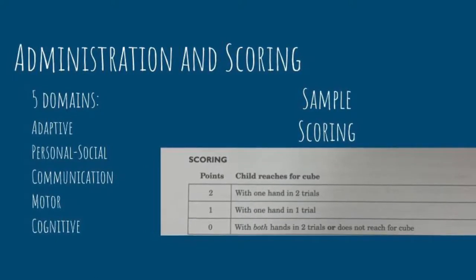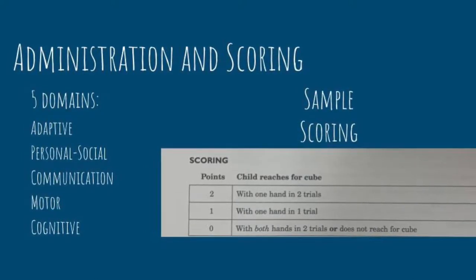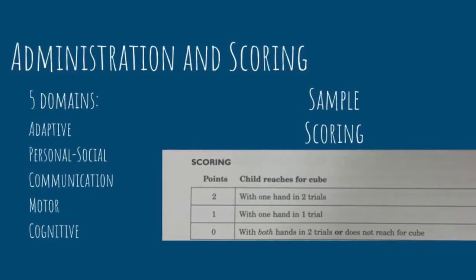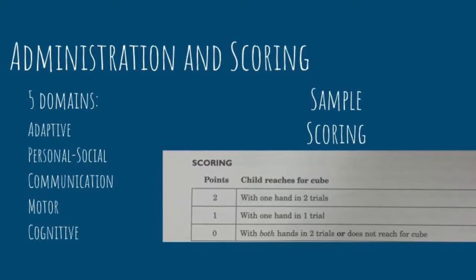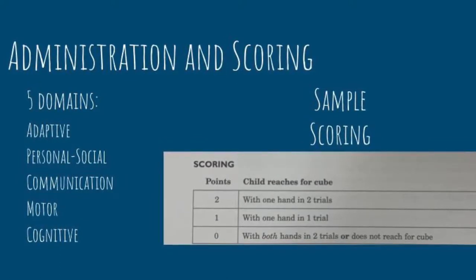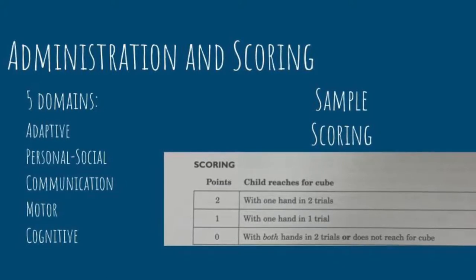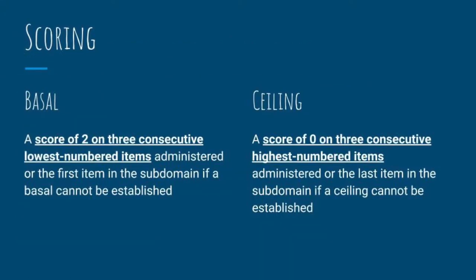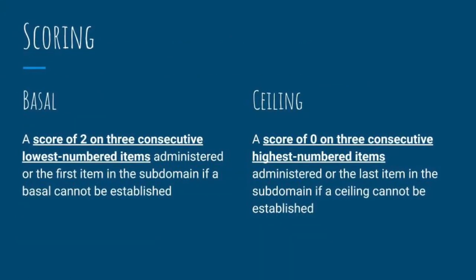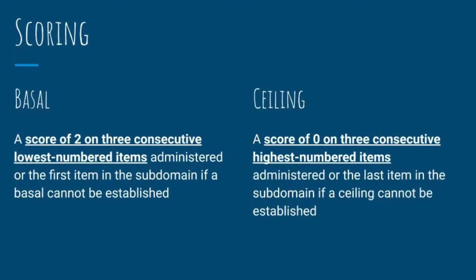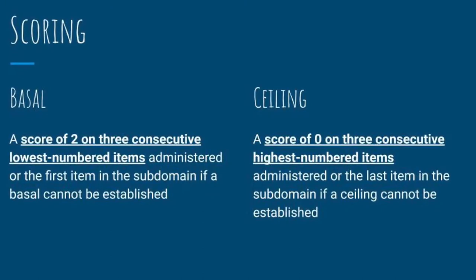The scoring is based on a 0-1-2 point system. Zero points are awarded if the patient did not attempt the task. One point is given if the task is attempted or partially completed, and two points are awarded if the task is completed fully and the milestone is reached. Chronological age must be determined for the screener to completely score the patient. To determine the basal, a score of two on three consecutive lowest numbered items administered, or the first item in the subdomain if a basal cannot be established.